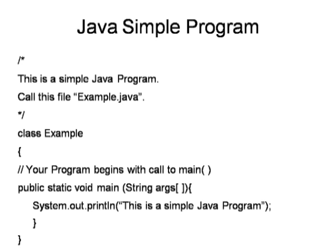'Public' means this is the main function which we can use anywhere in our project. 'Static' means we do not need to instantiate this function — we can directly access it. 'Void' means it will not return a value. 'Main' is the entry point of our program by which the whole program executes. 'System' is a class, 'out' is one of the class variables in that, and 'println' is a method which prints the given string on a line.